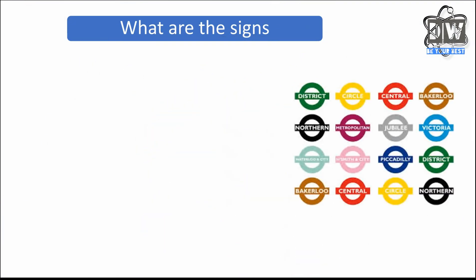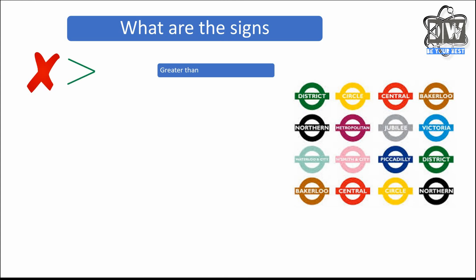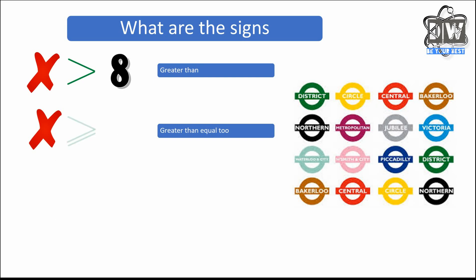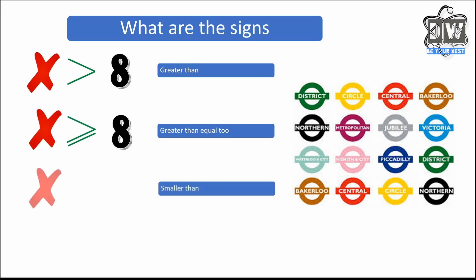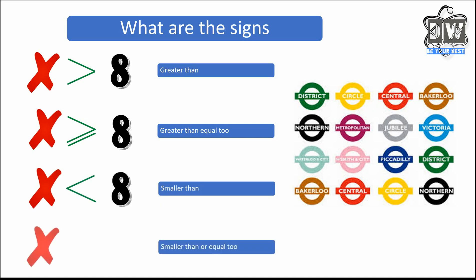What are the signs? We've done this before. They help us to understand and compare two numbers. So: x is greater than 8; x is greater than or equal to 8 — we know what that means, it could be 8 as well; x is smaller than 8; and smaller than or equal to 8 — so it could be less than 8 or it could be 8 itself.